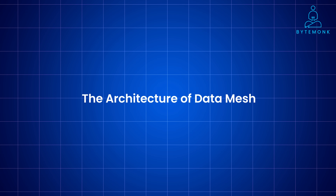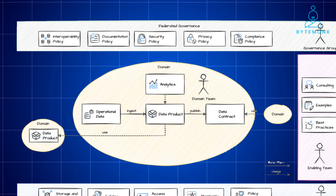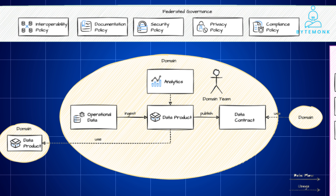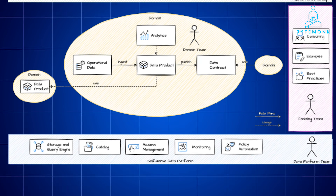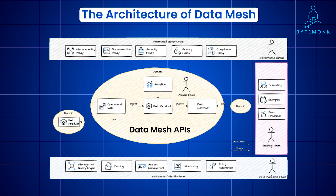Now let's look at how data mesh translates into actual architecture. The key components start with domains — the building blocks of data mesh, each representing a specific business function like marketing, sales, or finance. Domain teams manage data collection, transformation, and serving. Data products are packaged datasets that a domain team creates and exposes to other domains, well-defined with clear schemas and documentation. The platform allows domain teams to build and manage their data pipelines without relying on central IT, including tools for data ingestion, transformation, and serving. Data mesh APIs act as communication channels between domains, enabling discovery, access, and consumption of data products.